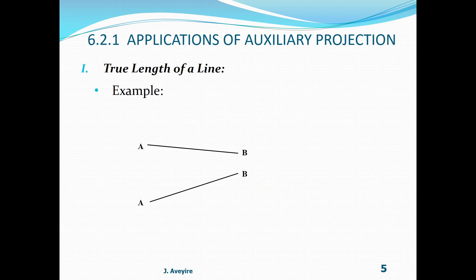True length of a line — example. Here we have the two views: the front view on top and the plan beneath. For vector AP, this is the vector perpendicular to AB in the plan, so that is AP because it is inclined. We need a mutual view, which here is the front view, and we need a mutual projector to produce the mutual view in the vertical direction. We then introduce our reference plane XY, which has been introduced here.